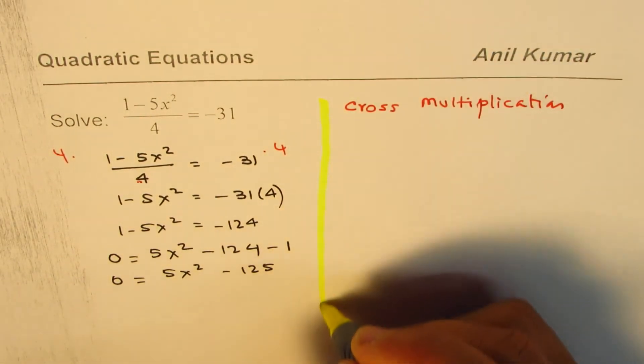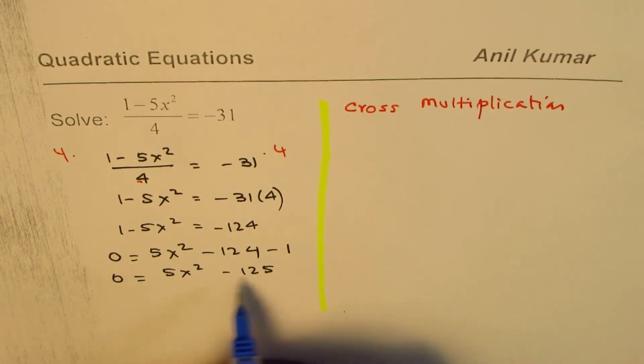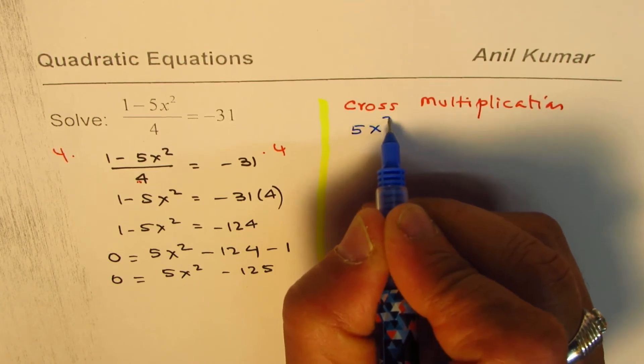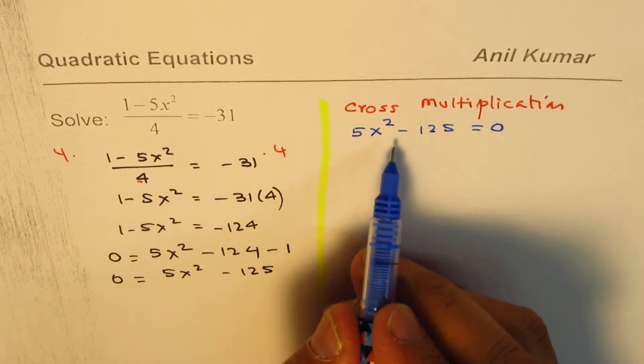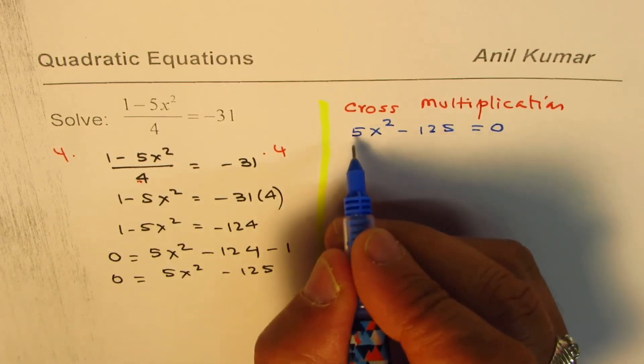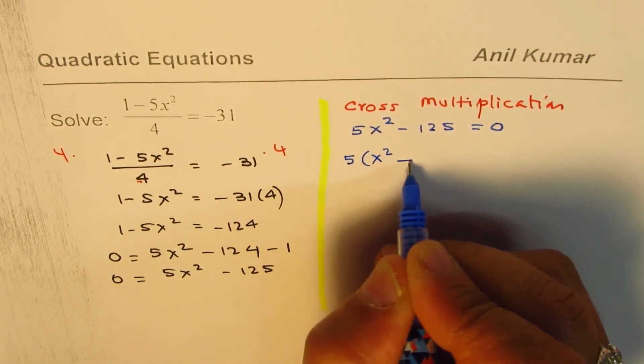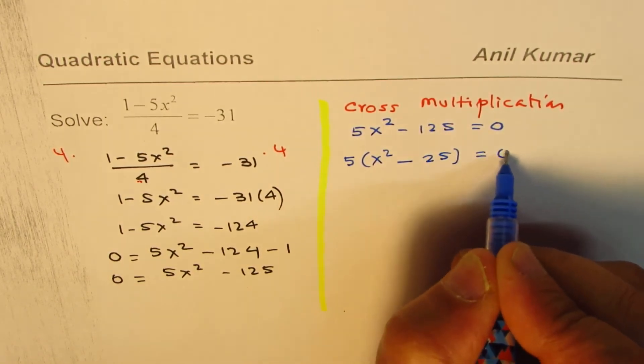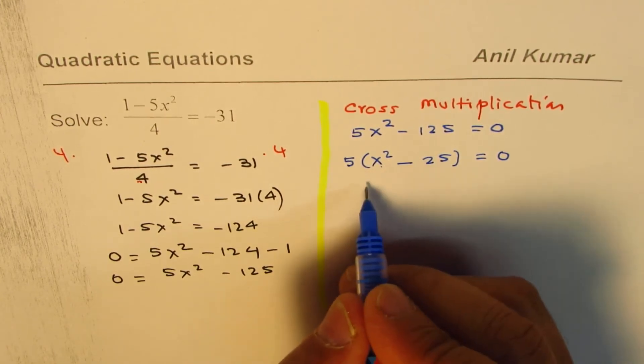Now let us see how to solve this equation. So I'll actually follow two strategies to solve this equation. Strategy 1 is, let me rewrite the equation: 5x squared minus 125 equal to 0. We could factor. If I factor 5, I get x squared minus 125 divided by 5, which is 25, equals 0. Now 5 cannot be 0. The only inside part could be 0.